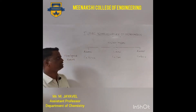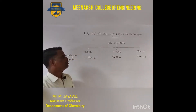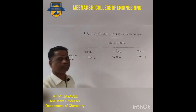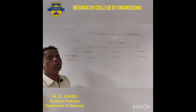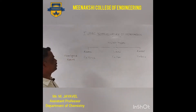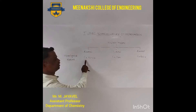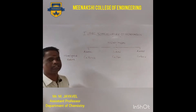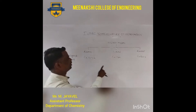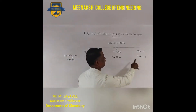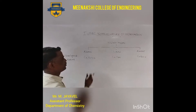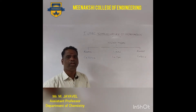Now let us discuss hydrocarbons, which are broadly classified into alkane, alkene, and alkyne. These form homologous series with general formulas: CnH2n+2 for alkane, CnH2n for alkene, and CnH2n-2 for alkyne. Using these general formulas, we can derive the corresponding homologous series.